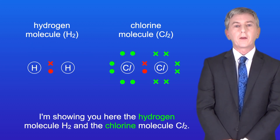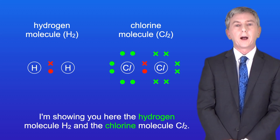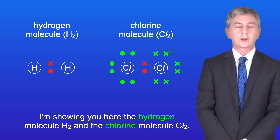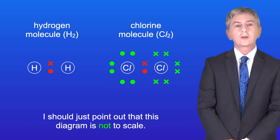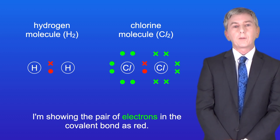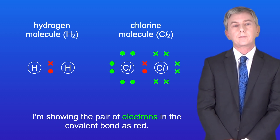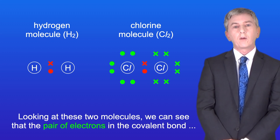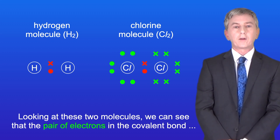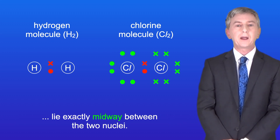Here I'm showing the hydrogen molecule H2 and the chlorine molecule Cl2 — this diagram is not to scale. The pair of electrons in the covalent bond is shown in red. Looking at these two molecules, we can see that the pair of electrons in the covalent bond lies exactly midway between the two nuclei.